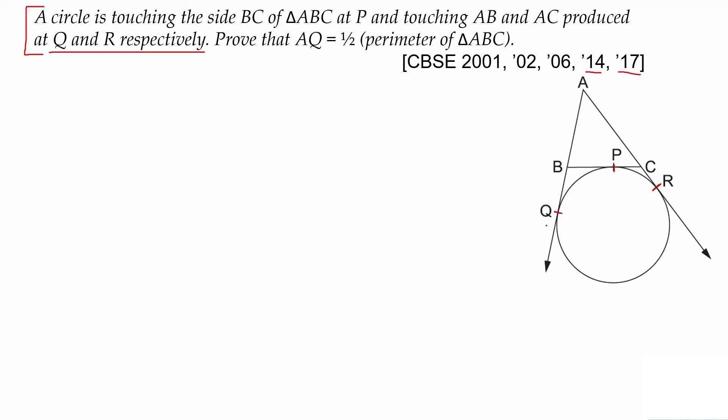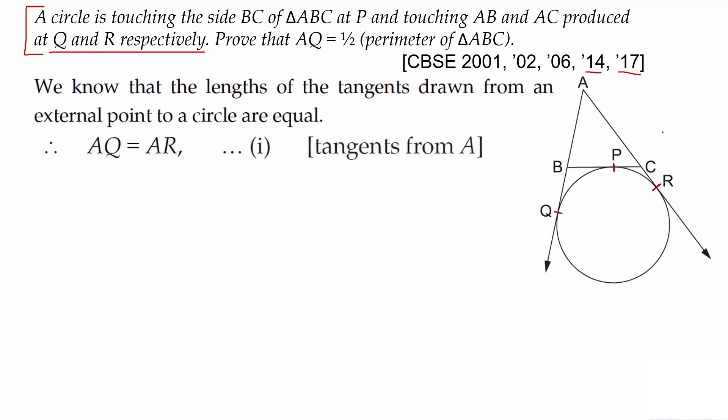We know that the lengths of tangents drawn from an external point are equal. So we can write: AQ equals AR (tangents drawn from A), BQ equals BP (tangents drawn from B), and CP equals CR (tangents from C).